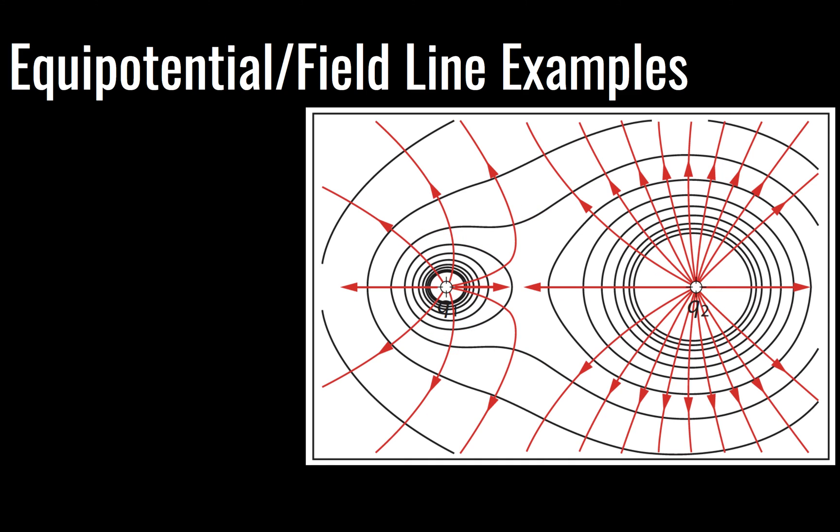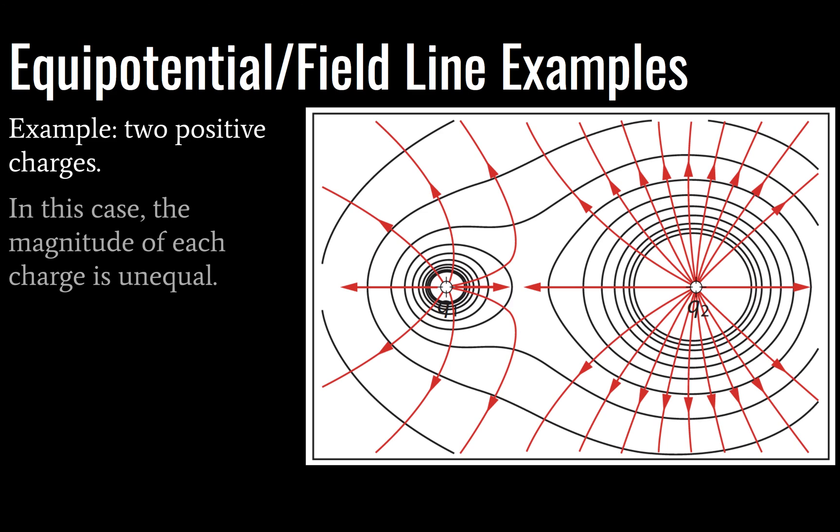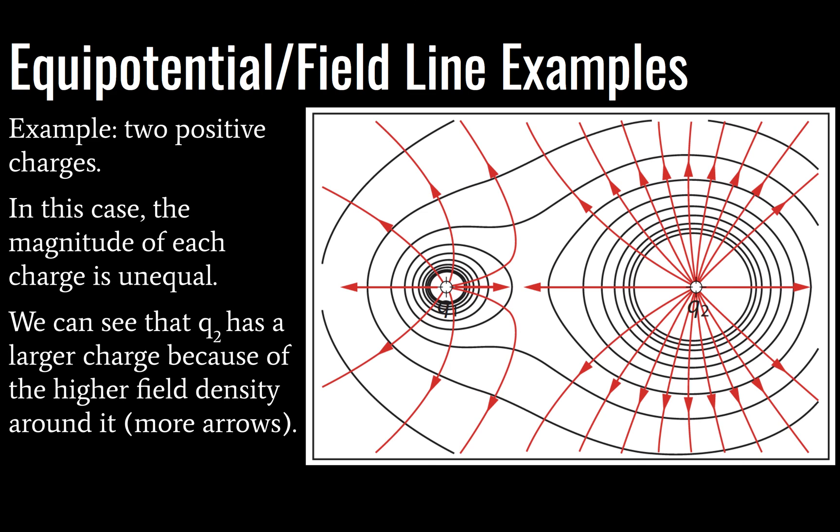Next slide. Here we have two unequal charges. They're both positive, but q1 is going to have a smaller charge than q2 because q2 has a higher field density around it. In other words, it has more arrows. You'll also note that the equipotential lines for q1 are closer together. So our equipotential surfaces are closer together, suggesting a smaller charge.